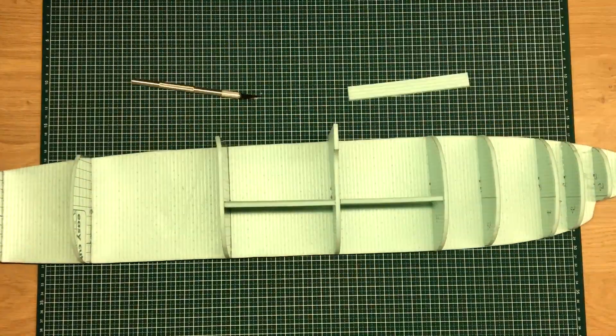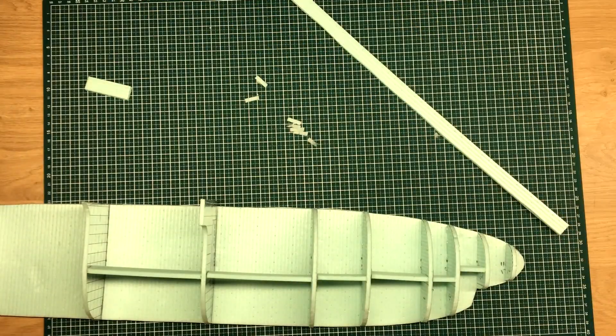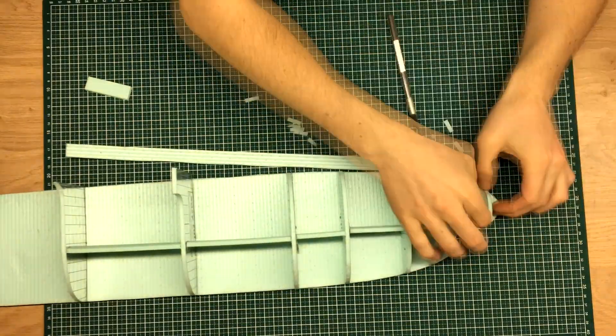I have also added supports between the ribs, mainly to prevent the fuselage from flexing while it's still being worked on.